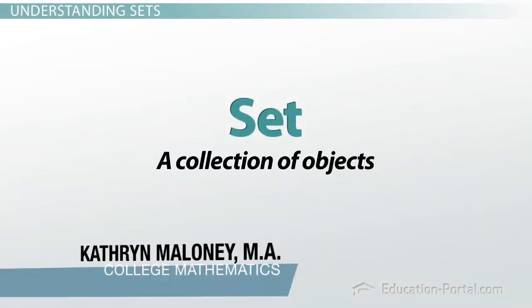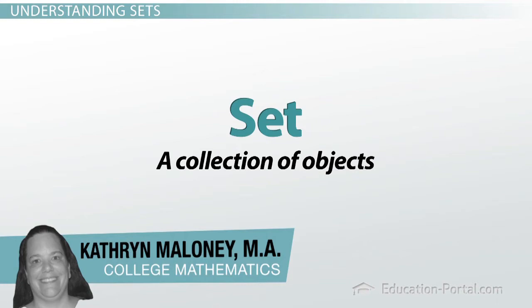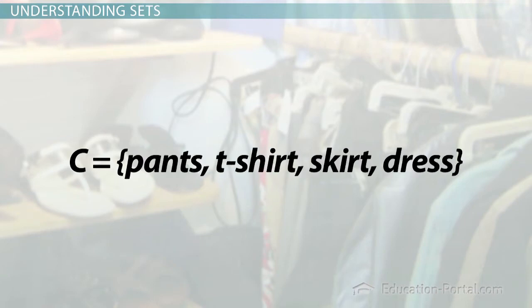A set is a collection of objects, and it doesn't need to be a number. This is the set of clothes in my closet. C equals pants, t-shirt, skirt, dress.